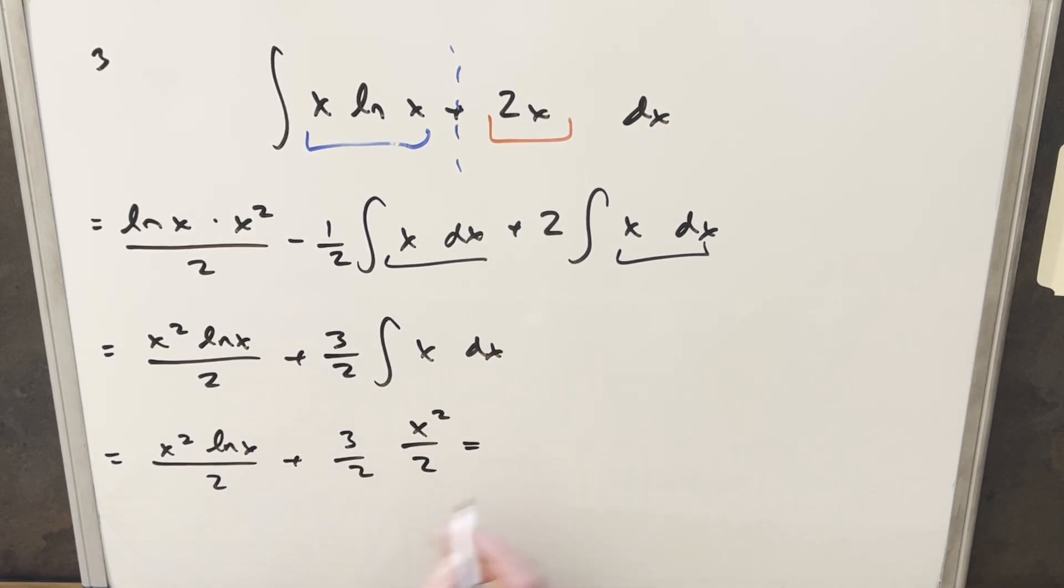Okay, so now just putting everything together, we'll copy down this first piece, x squared lnx over 2. Multiplying this together, this is going to give me 3 fourths x squared. Put a plus c, and that's it.